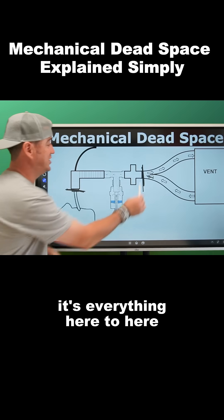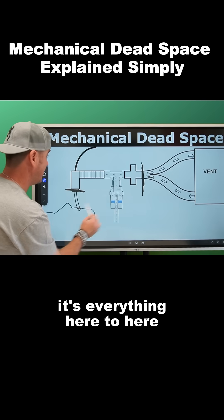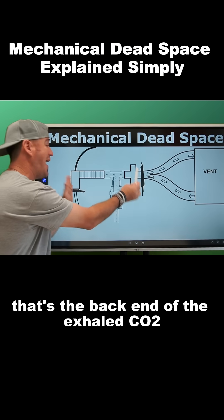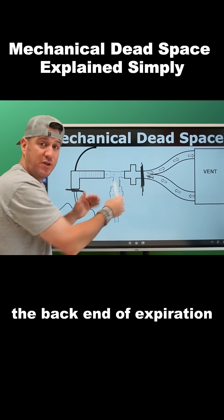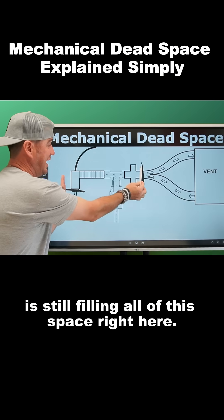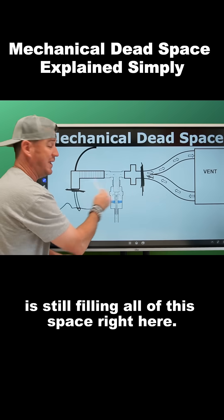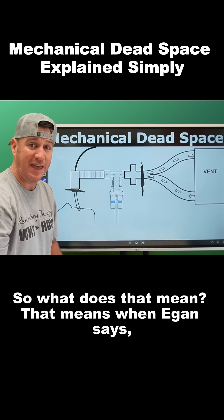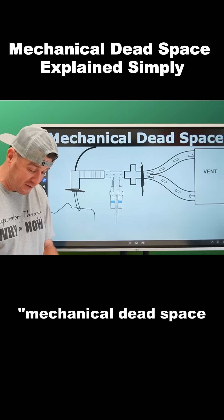Everything from here to here—that's the back end of the exhaled CO2, the back end of expiration—is still filling all of this space right here. So what does that mean? When Egan says mechanical dead space is defined as the volume of gas rebreathed.